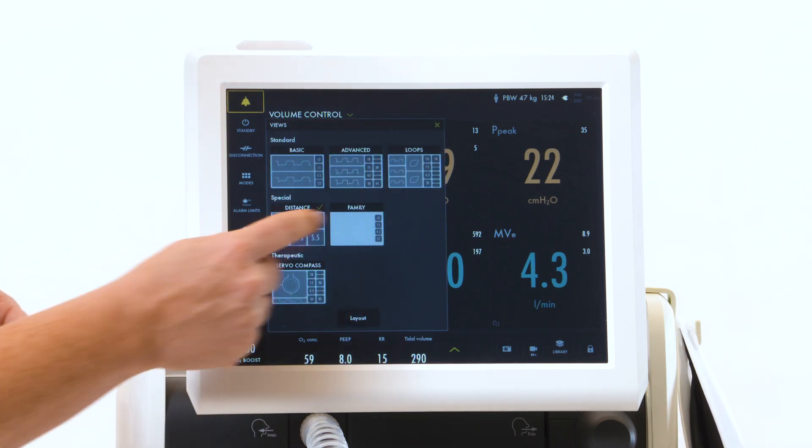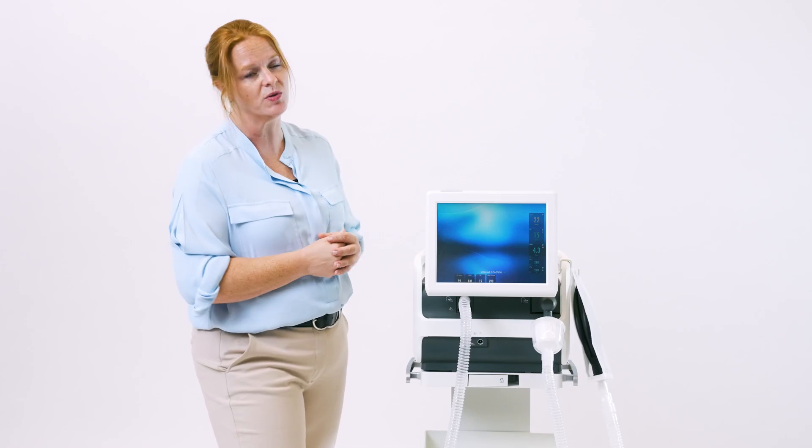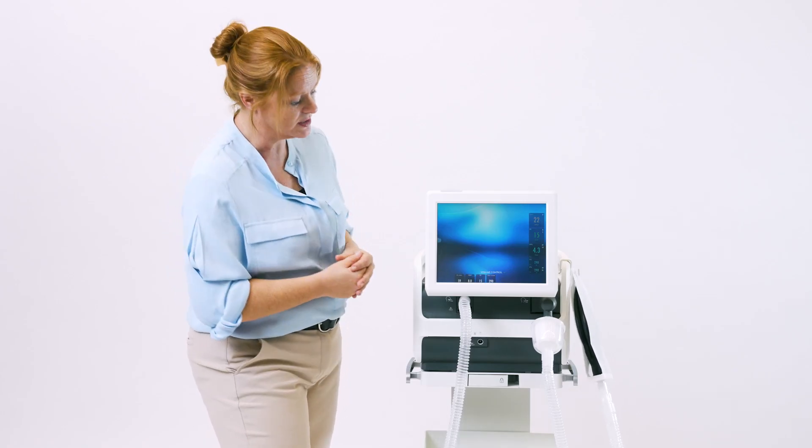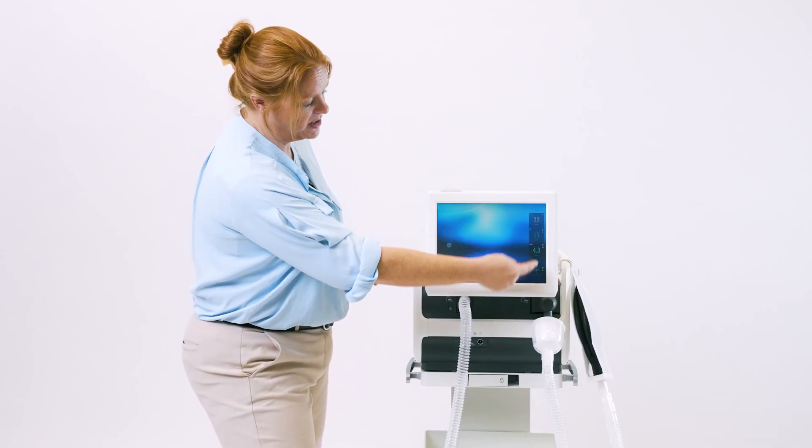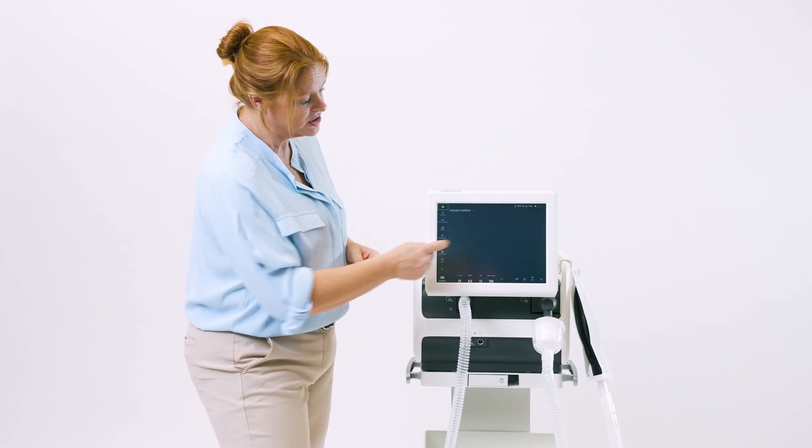When you look at your family screen, it's a more simplified view. You still have your settings and measured values. The bubbles indicate that ventilation is occurring. In order to get out of the screen, just touch.